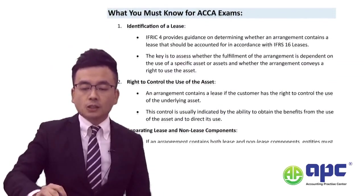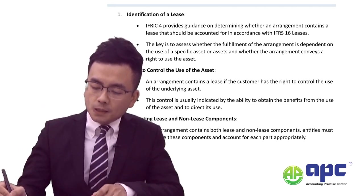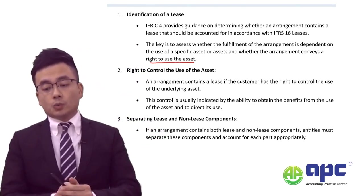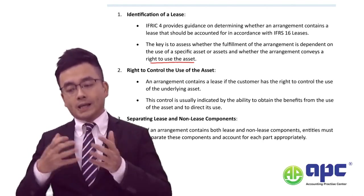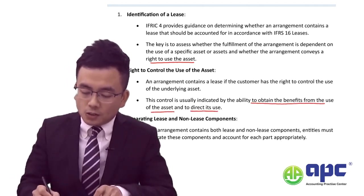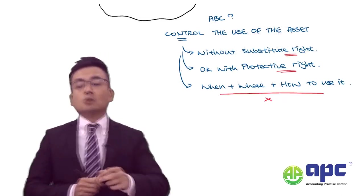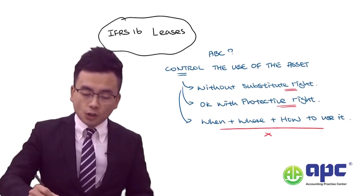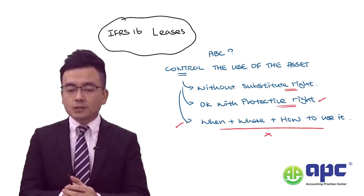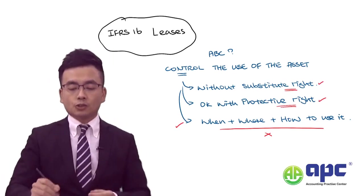Here are a couple of points you can apply to your exam answer. Firstly, we need to assess whether we have a right to control the use of the asset — meaning we can decide when, where, and how to use it — so we have the ability to obtain benefits from using the asset and to direct its use. I would also always advise students to address how protective rights do not affect the lease determination, but that substitute rights are a very important consideration.